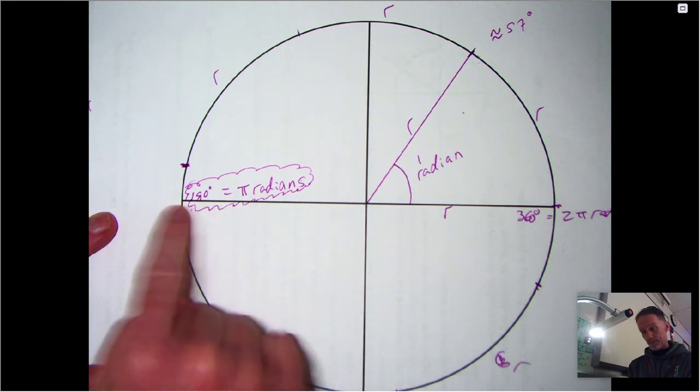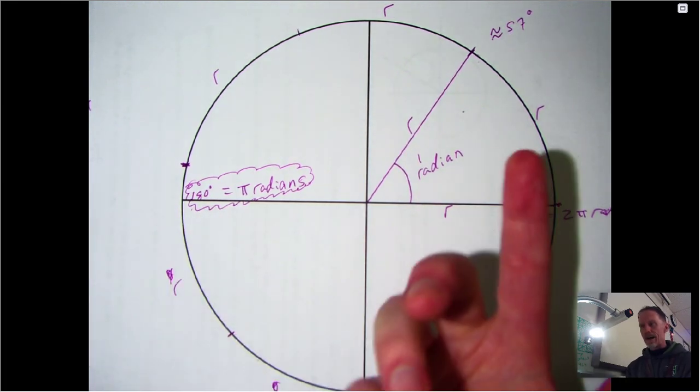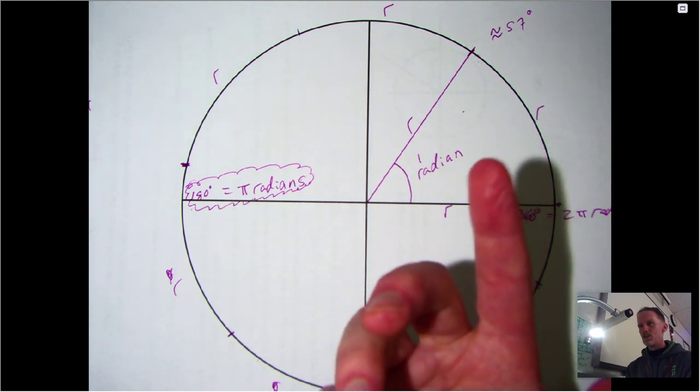If you think about it, notice there's a little bit more than three of the radius lengths, or a little bit more than three radians, in a half circle—180 degrees. If you think about a number that you have used for a long time that's a little bit more than three...